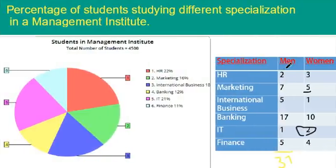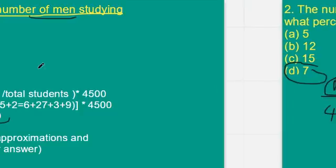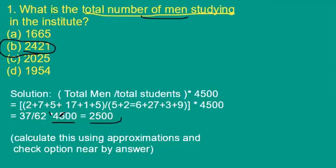See this figure. We have to calculate the total number of men out of the total number of students. We add the men's ratio: 37. Then the total ratio: 2+3=5, 7+5=12, 5+1=6, 17+10=27, 1+2=3, 5+4=9. Adding all gives 62. So we calculate 37 out of 62 into 4500. That gives 2525, and using approximation the nearest answer from the options is 2421.